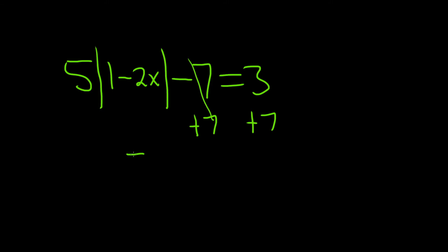So we're left with 5 times the absolute value of 1 minus 2x, and that's equal to 10. 3 plus 7 is 10.